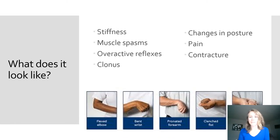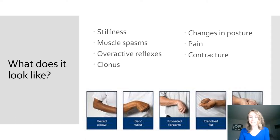Spasticity may look different from person to person. Some common signs of spasticity include stiffness, muscle spasms, overactive reflexes, or clonus, which is uncontrollable rhythmic shaking movements. Spasticity may also cause changes in posture, pain, and eventually contracture. A contracture is when the joint loses its ability to move and is left in a fixed position.